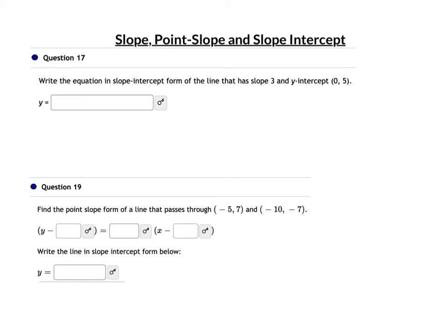Question 17 is quick. They give you m = 3 and the y-intercept — the line crosses the y-axis at 5, so b = 5. Using y = mx + b, the equation is simply y = 3x + 5.